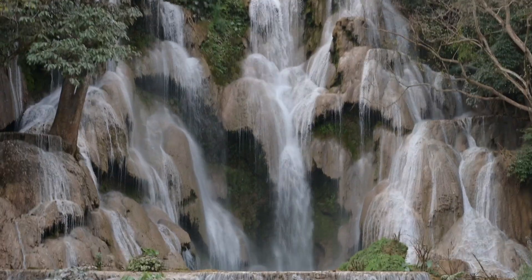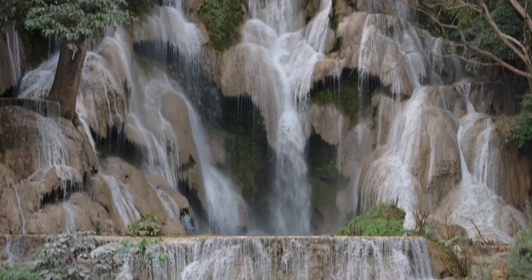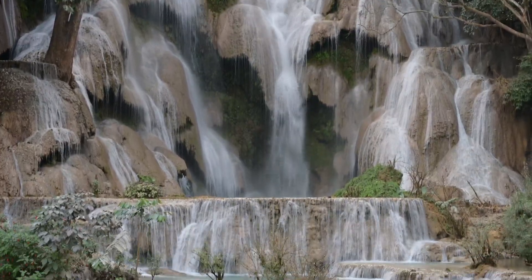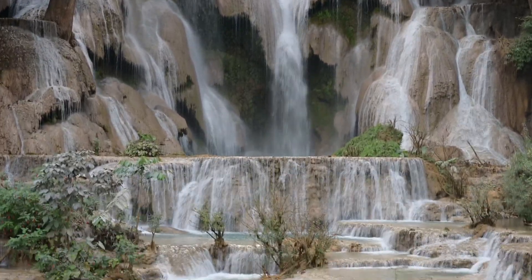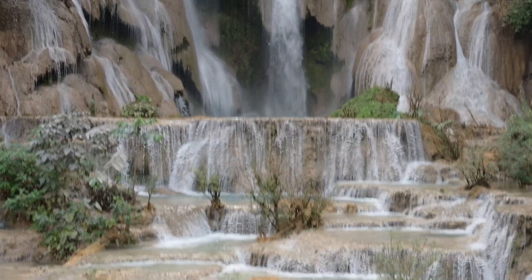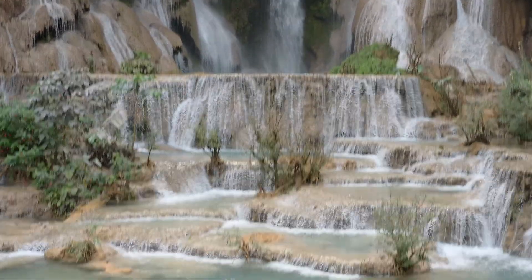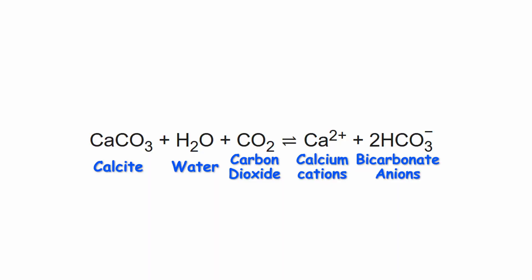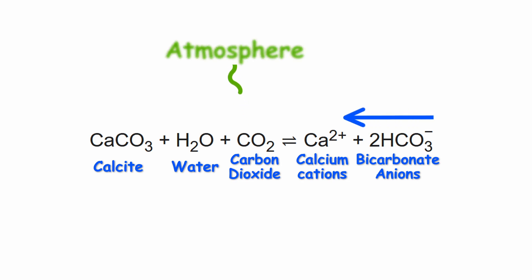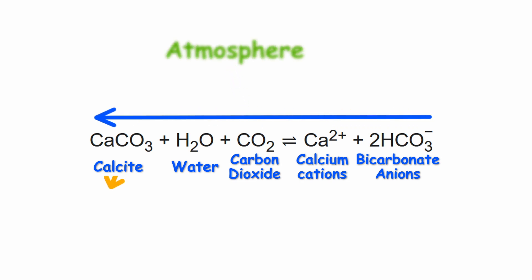When the saturated water returns to the surface via a spring, some of that CO2 is lost back into the atmosphere. The dissolution reaction is reversible, so if CO2 is removed from the water, the reaction is pushed to the left and calcite precipitates out of the solution.